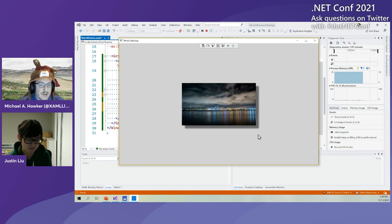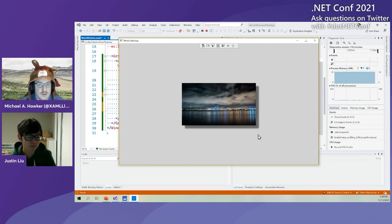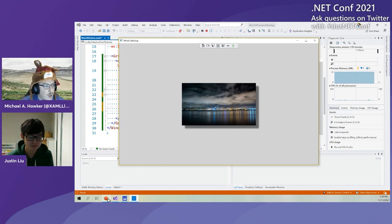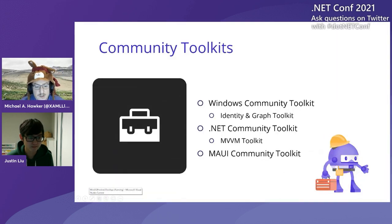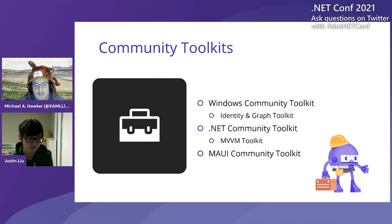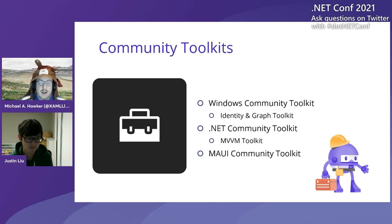So that gives you an idea of how you can start building and compositing these little bits of samples together as you're building out an experience in your app and leverage the toolkit and our sample app to do that. So let's talk a little bit more about our toolkits. We actually have a variety of different toolkits for different technologies. Of course, I've been showing the Windows Community Toolkit and we have what we call our identity and graph toolkit within that, which has helpers for doing authentication and connecting to the Microsoft Graph. So if you wanted to, for instance, sync documents and settings to OneDrive and share that data across a user's devices so they have a consistent experience with your app, you can do that there.